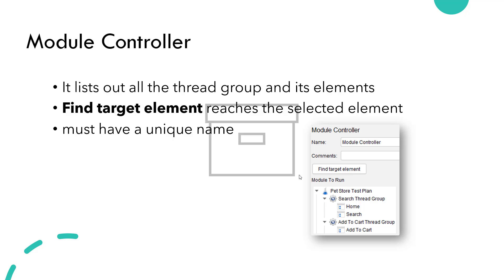You can add multiple Module Controllers in your test plan, but make sure you have given them unique names. Otherwise, JMeter will not be able to identify which target element to execute.